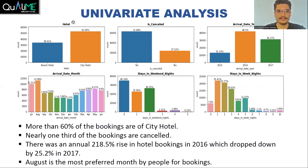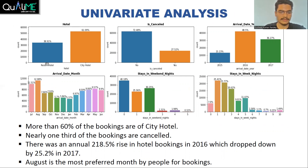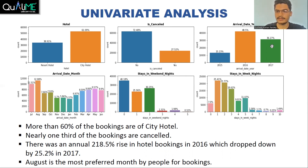After feature engineering, we started with univariate analysis. We plotted all discrete features, focusing on the key ones useful for business decisions. More than 60% of the bookings are for city hotel, with fewer bookings for resort hotel. Nearly one third of the bookings are cancelled. There was an annual rise of 218.5% in 2016, but in 2017 it dropped by approximately 25%. August is the month with the highest number of bookings, followed by July.